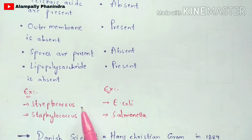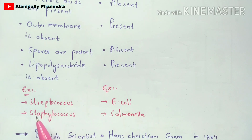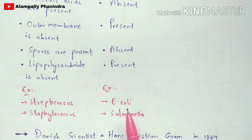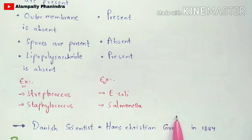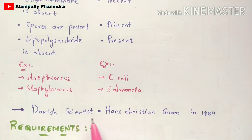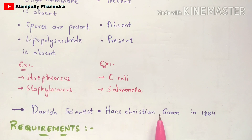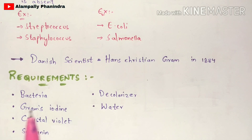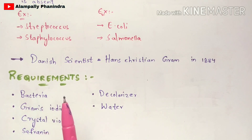Some examples of gram positive bacteria are Streptococcus and Staphylococcus, and examples of gram negative bacteria include E. coli and Salmonella. Coming to the history of gram staining, a Danish scientist named Hans Christian Gram discovered the procedure of gram staining in 1884.